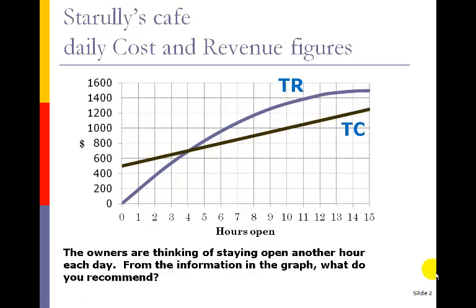To answer this question, one of the things we'll be using is slopes. Slopes can analyze this. At around the 6th hour, I've got this orange line representing the slope. At the 6th hour, the orange line is steeper than the cost line, indicating that revenue is going up faster than cost. That means we're bringing in more revenue than cost in that hour, so the 6th hour is a good time for the business.